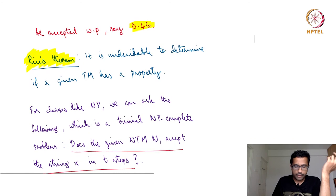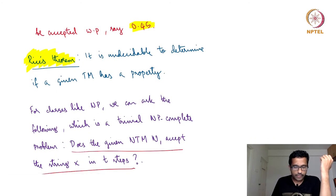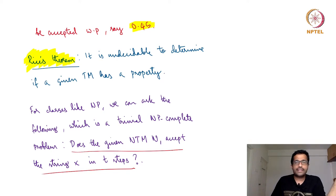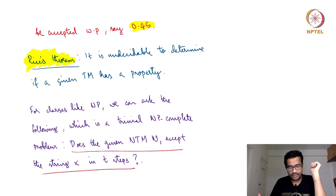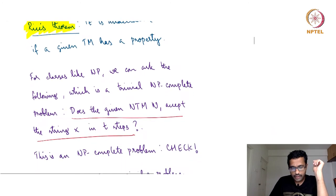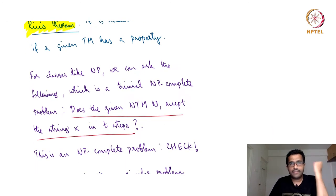Because of this, given a probabilistic Turing machine, we cannot say whether it accepts a BPP language or is a BPP decider for a language. So again, we started with the question: does BPP have a complete problem? We are coming to that.